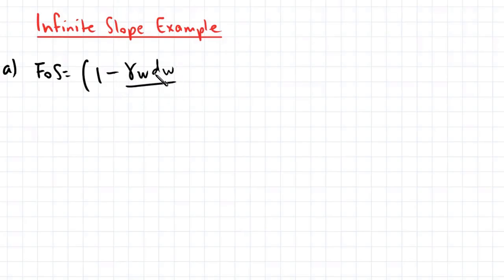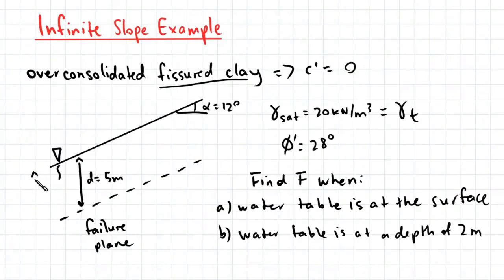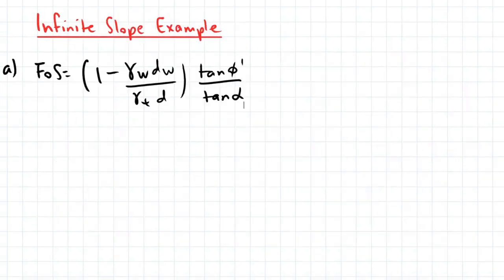So 1 minus gamma w d w divided by gamma t d multiplied by tan phi dash divided by tan alpha. Now because the water table is at the surface, so this here is d w, these two terms here are cancelled out.